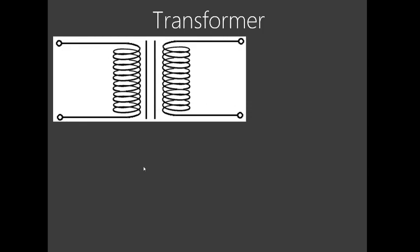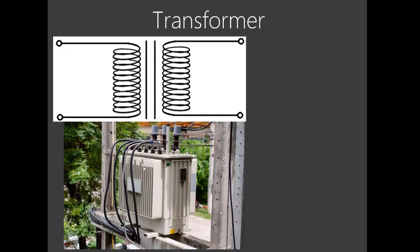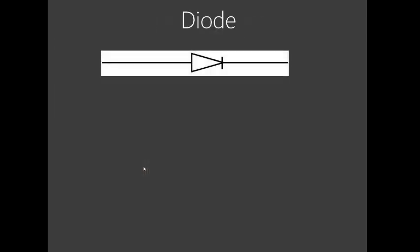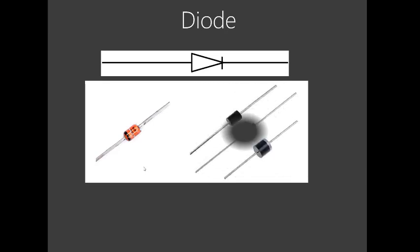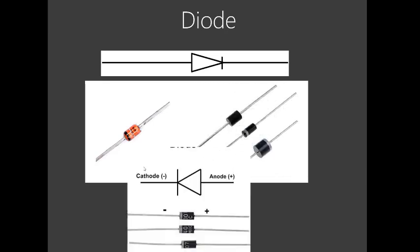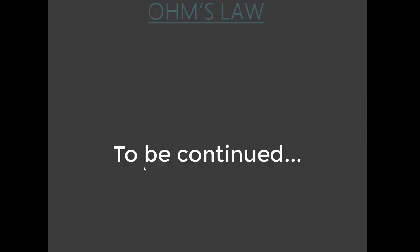Transformers — we've seen transformers before. That is the symbol of a transformer. Now, diodes — yes, a diode is a device that allows current to flow in only one direction. The images of diodes are here — you've seen them before. This is how they are represented in circuit diagrams.